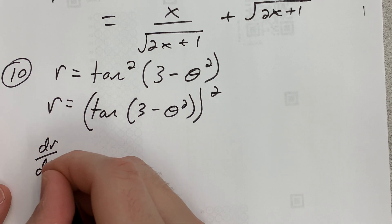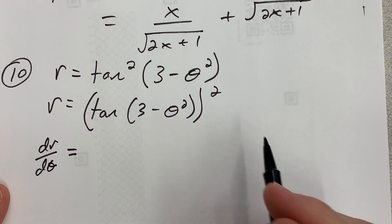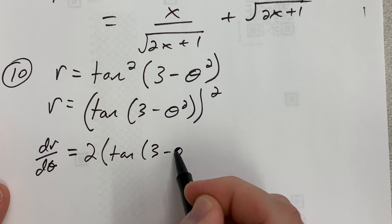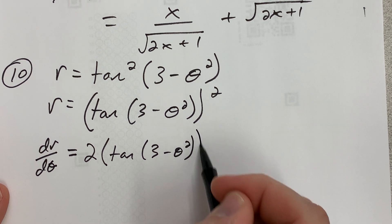...can be two, leave the inside alone: tangent(3 - θ²), subtract one from the power so that's just one, times by the derivative of the inside.